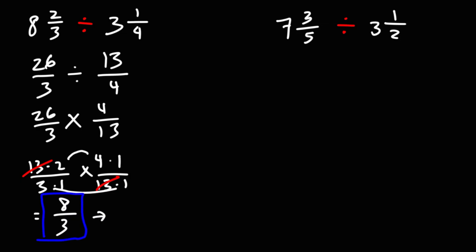But let's convert this to a mixed number. 8 over 3, we can write that as 6 over 3 plus 2 over 3 because 8 is 6 plus 2, and 6 is the highest multiple of 3 just under 8. 6 divided by 3 is 2, so we get 2 plus 2 thirds, which as a mixed number is 2 and 2 thirds. So that's the answer for the first example.